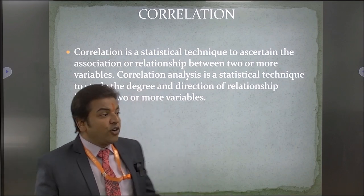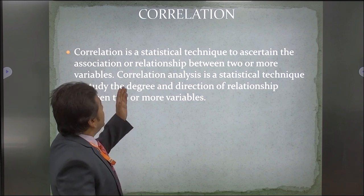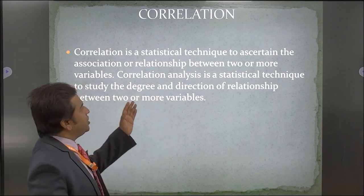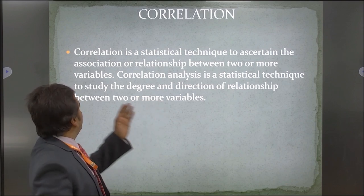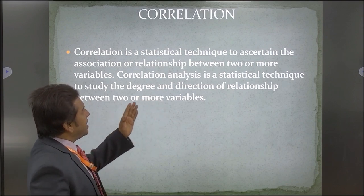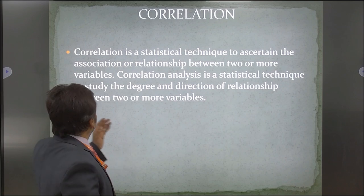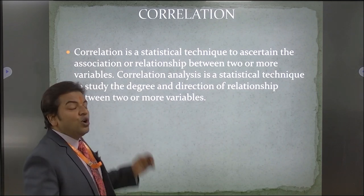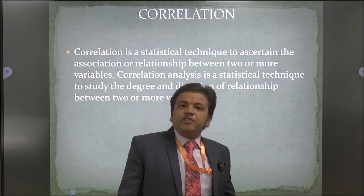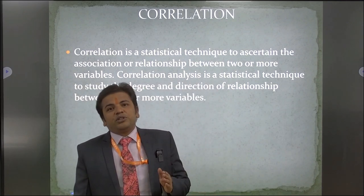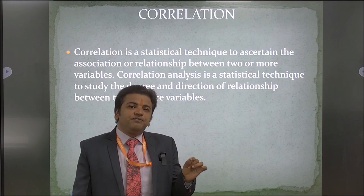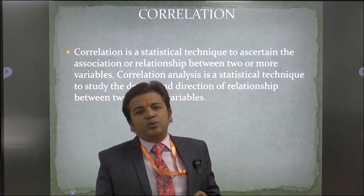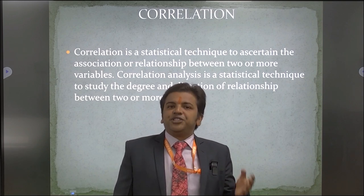Correlation is a statistical technique to ascertain the association or relationship between two or more variables. Correlation analysis studies the degree and direction of relationship between two or more variables. We use it to see the degree to which the relationship shifts between two series, as well as the direction — whether the two series are positively or negatively correlated.